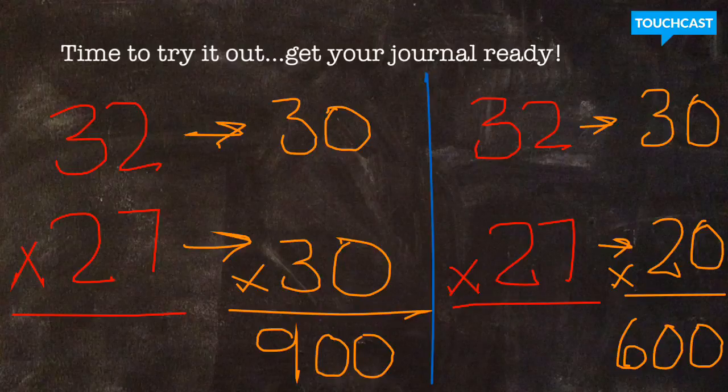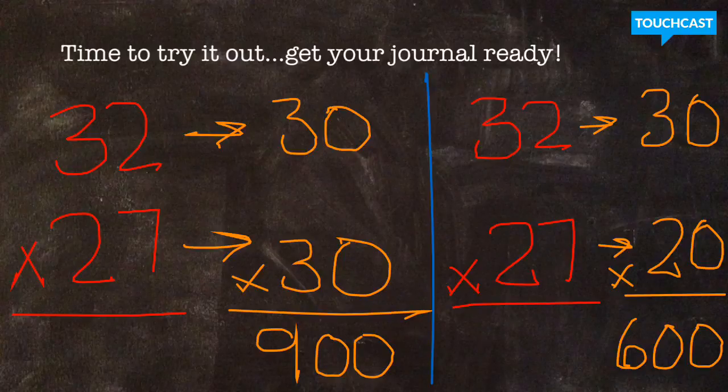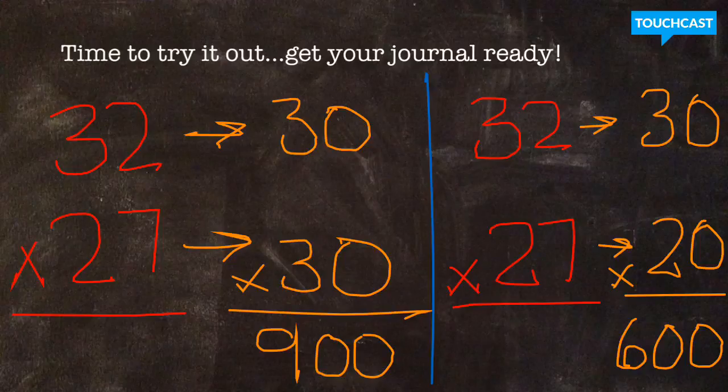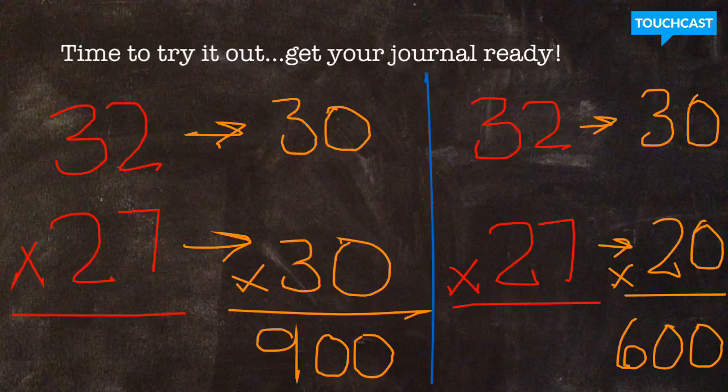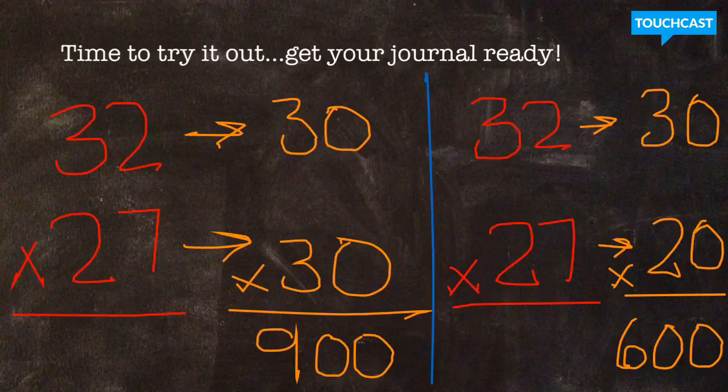Now, some of you may have tried out the equation on the right. 32, you might have originally looked at and thought, maybe I should round that to 30. And 27, I could round down to 20. 3 and 2 are also compatible factors. I would accept either of those answers. You rounded both of your numbers to find compatible numbers that you could easily multiply in your head.